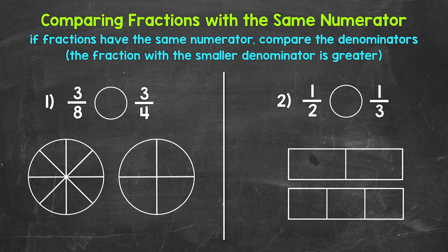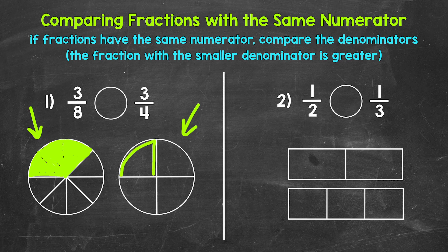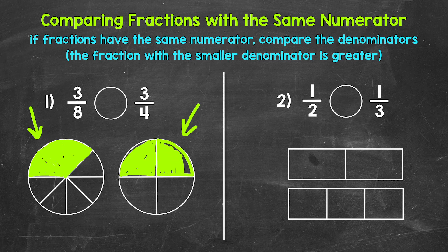Let's start with the model of 3 eighths. We need to fill in three equal parts out of the eight total equal parts — so 1, 2, 3. Now we need a model of 3 fourths. We need to fill in three equal parts out of the four total equal parts — so 1, 2, 3.